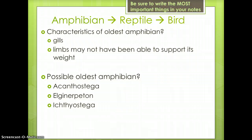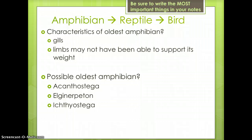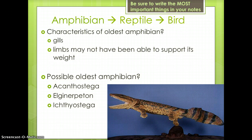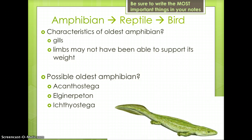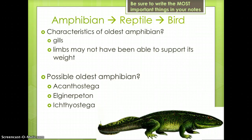Ancient amphibians have some characteristics that are different than modern day amphibians. Ancient amphibians had gills, and their limbs may not have been able to support their weight. Scientists do not all agree on what the oldest amphibian may have been. Some possibilities include Acanthostega, Elginerpeton, and Ichthyostega.